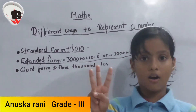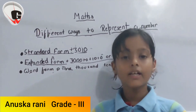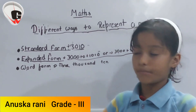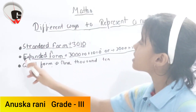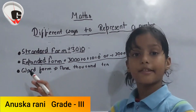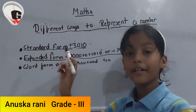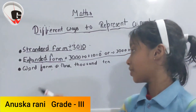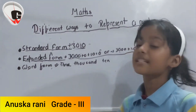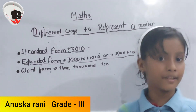There are three forms in which we can represent a group. First is standard form, second is word form. In standard form, we only write the number.